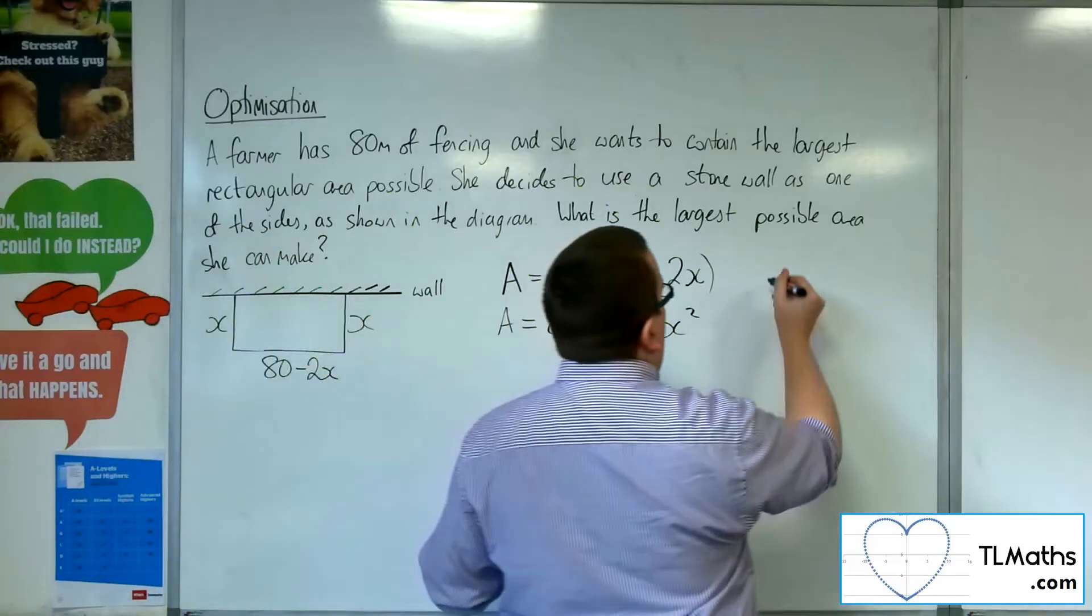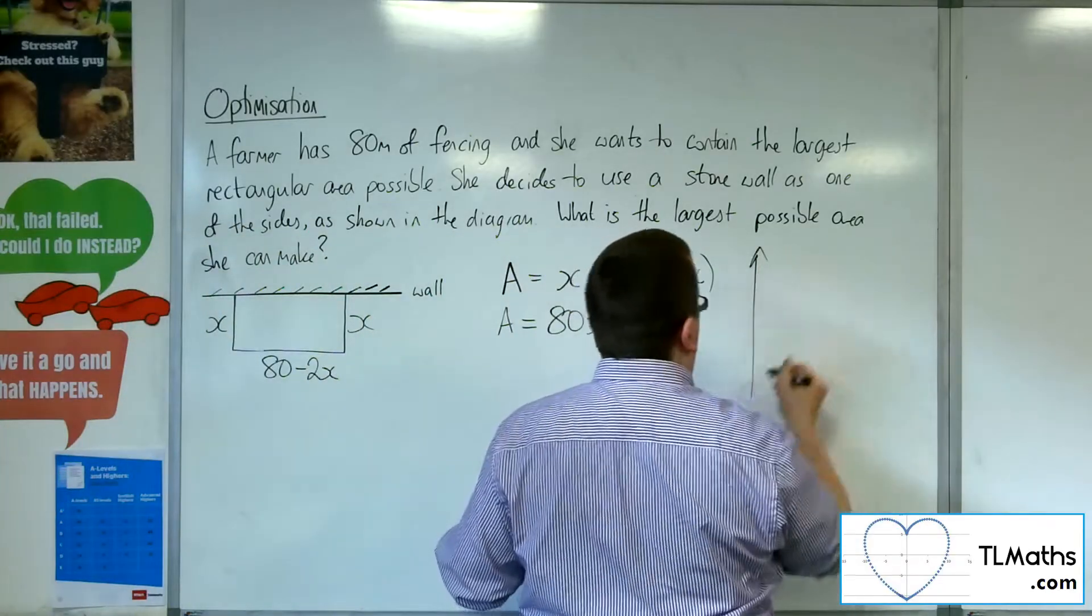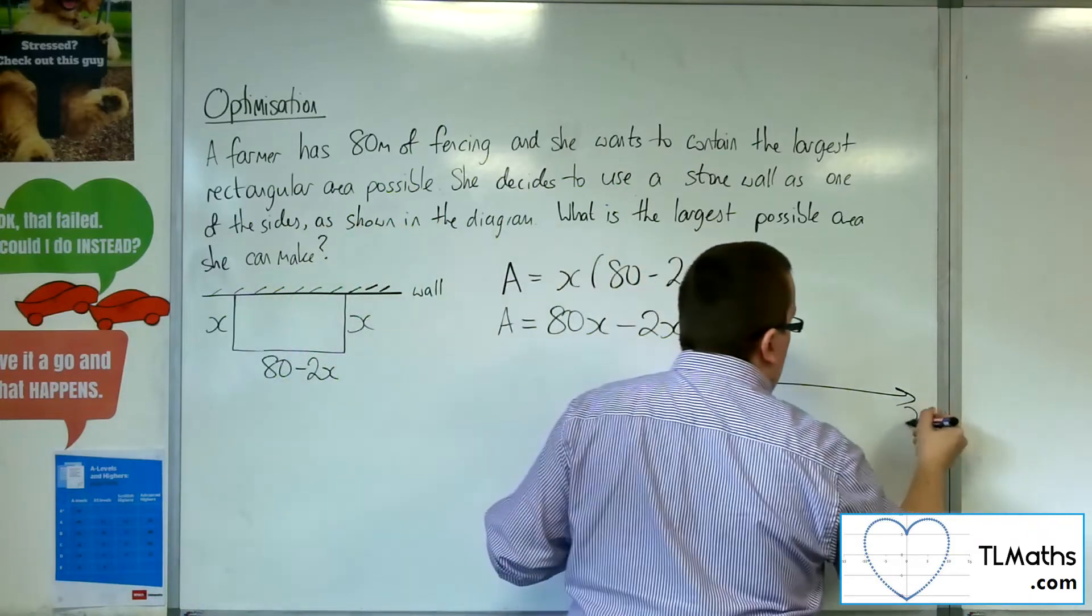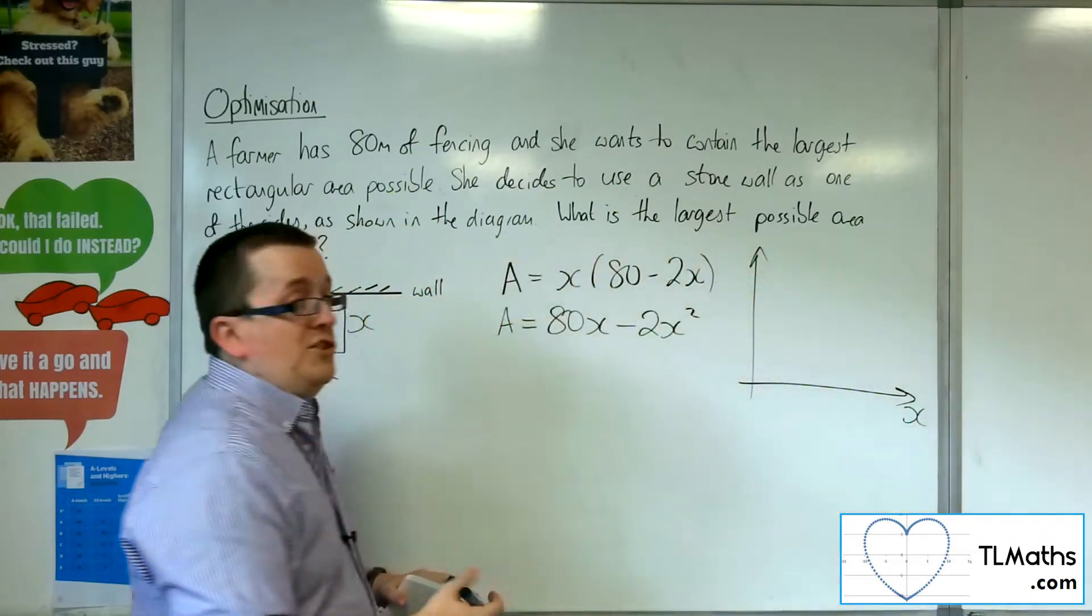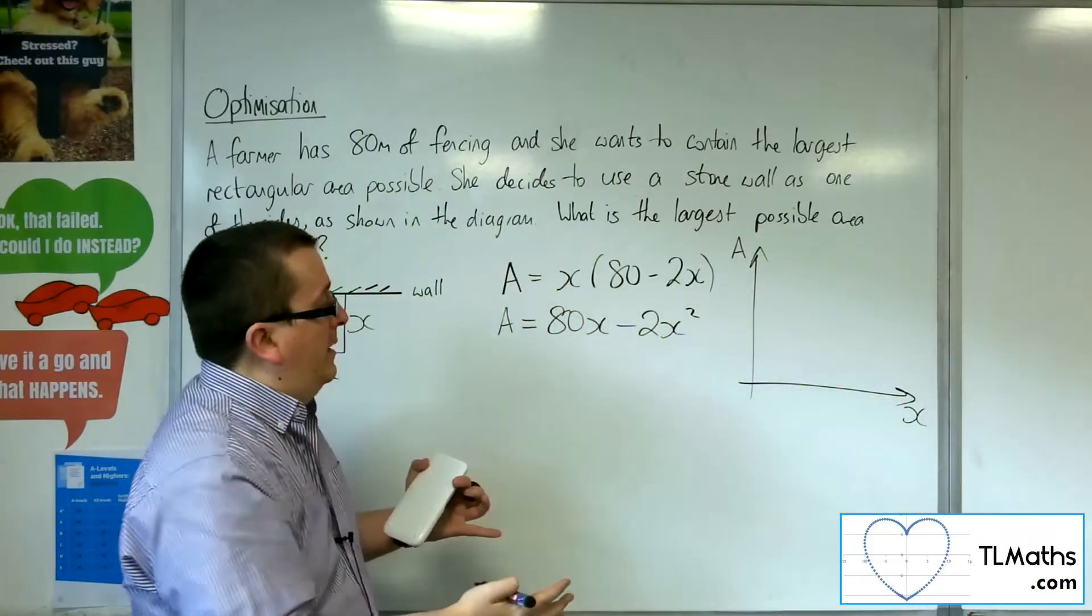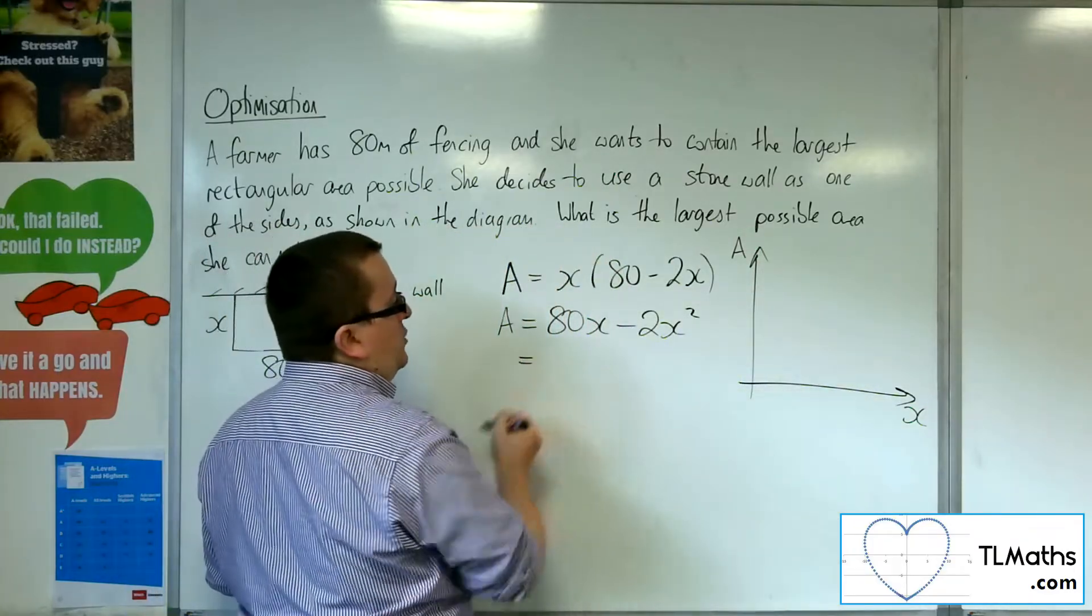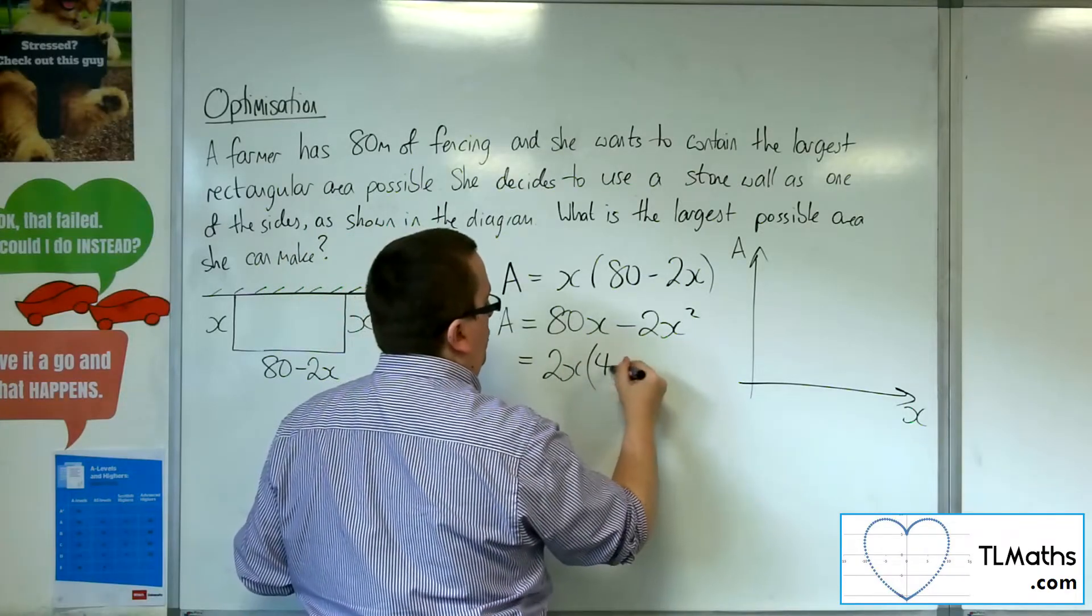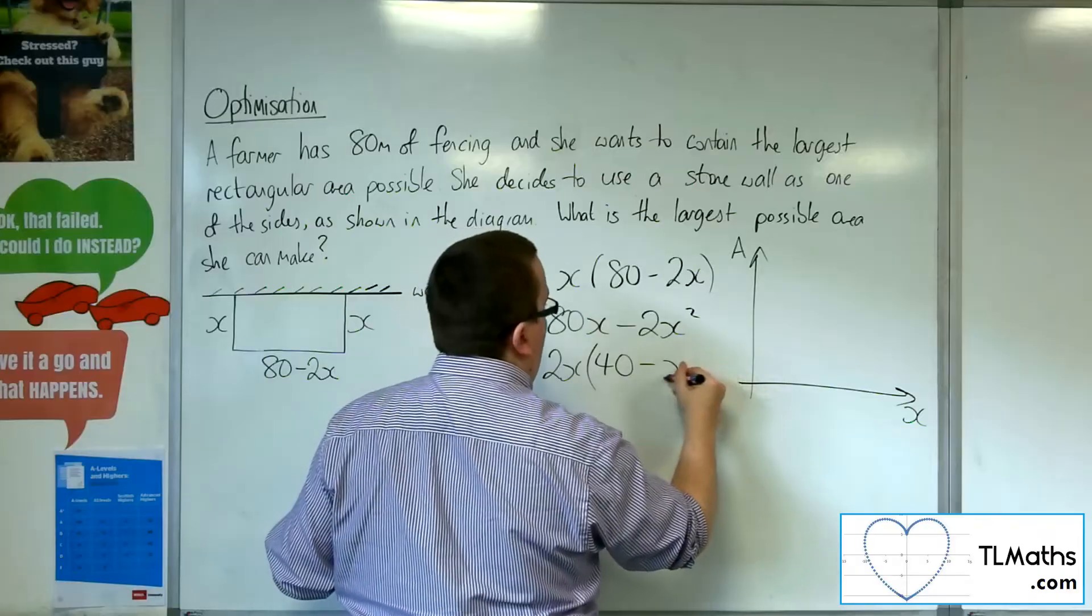This is going to give me a graph where I can plot the x's against the area. And this is a parabola. I can factor out 2x, and I would have 40 take away x.